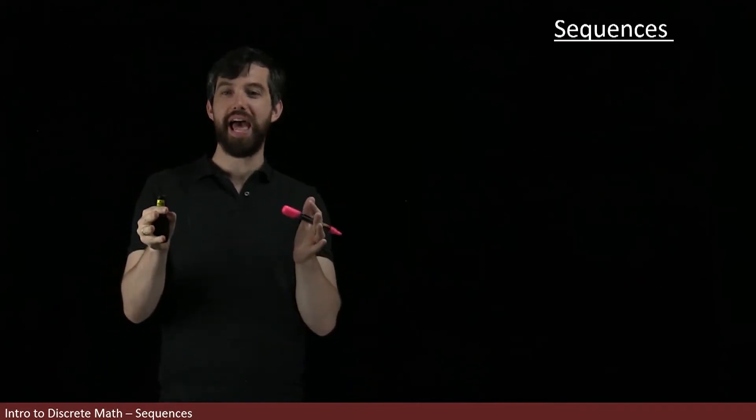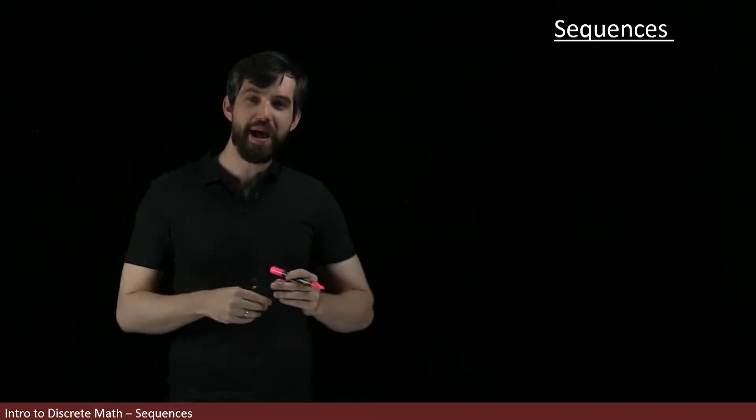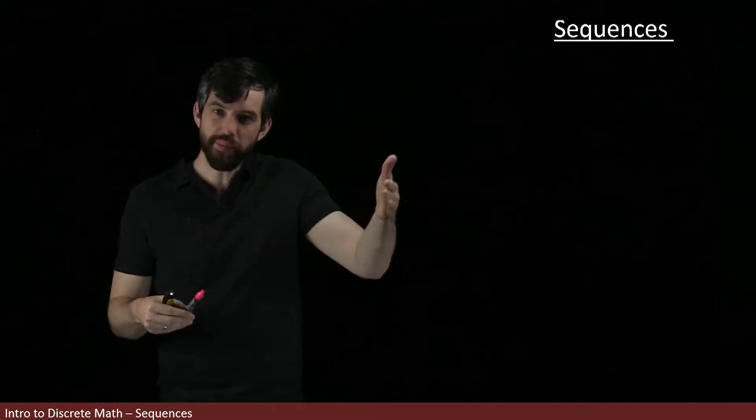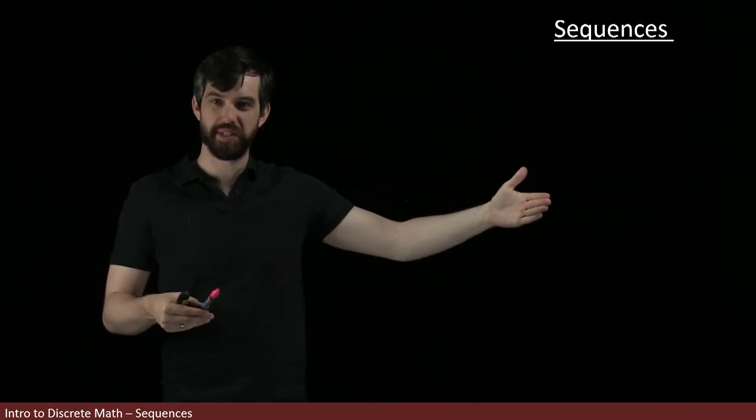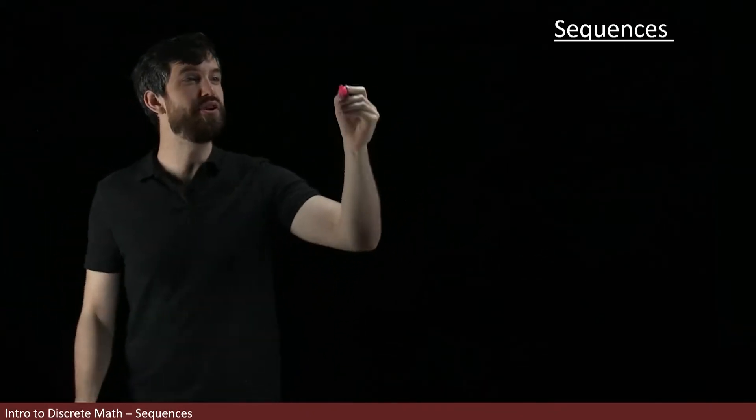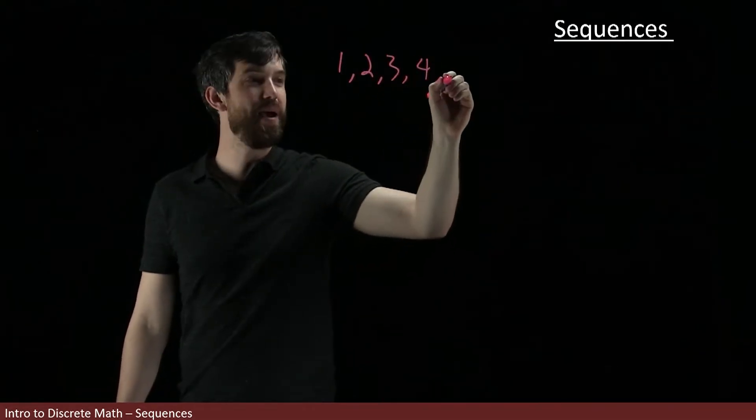In this video, we are going to look at the idea of sequences. So a sequence in mathematics is just going to be some list of objects, very often a list of numbers. So for example, here's a few different sequences. How about this sequence? One, two, three, four. I think you get the pattern.